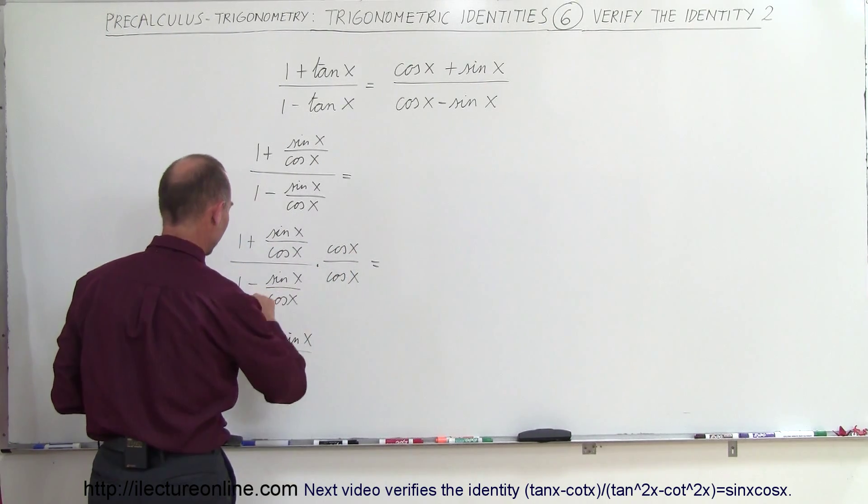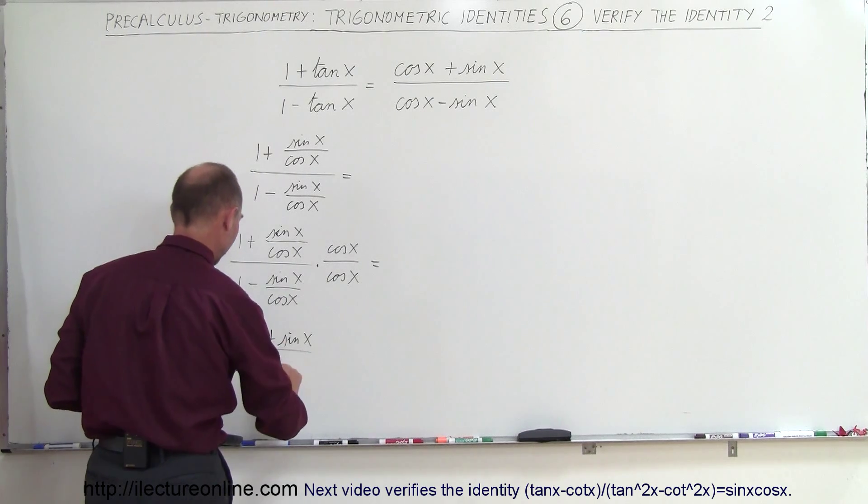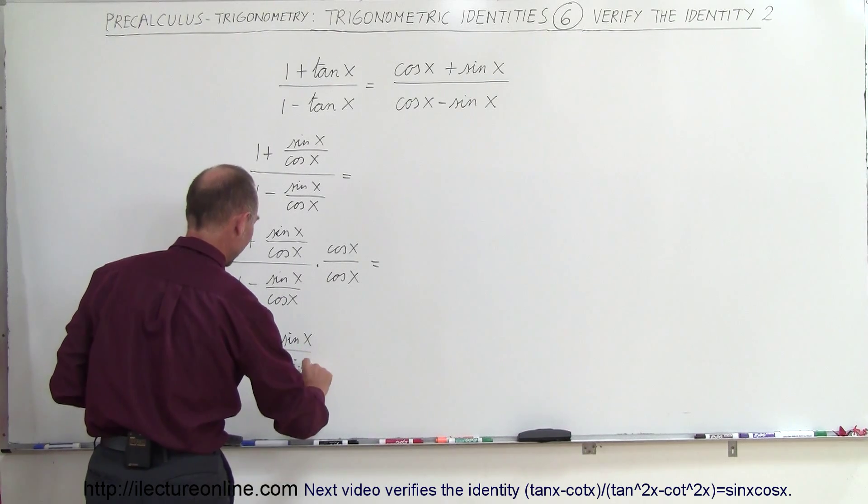And over here, this times this gives me the cosine of x. And here the cosines cancel out, and that's minus sine of x.